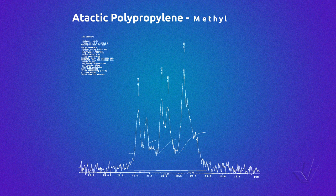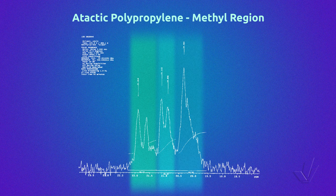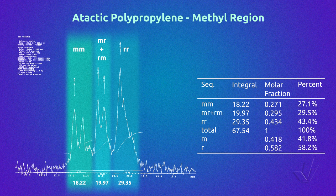Here we have the expansion of the methyl carbon spectrum. In this spectrum we can see some pentads, but we can perform without problem the calculation of the triad stereosequences. Using the integral of each triad, we calculate the molar fraction by dividing each area by the total area, and multiplying the molar fraction by 100 we obtain the triad percentage. We can also obtain the diad percentage using the equation that relates diads with triads.